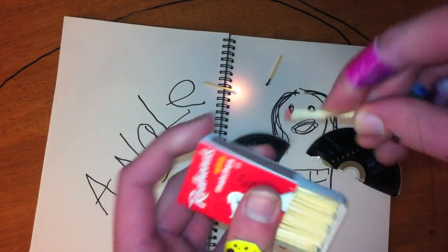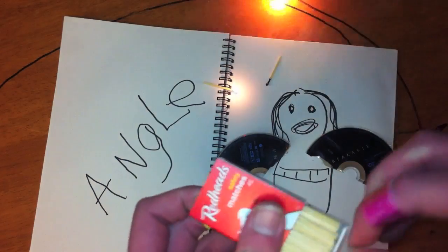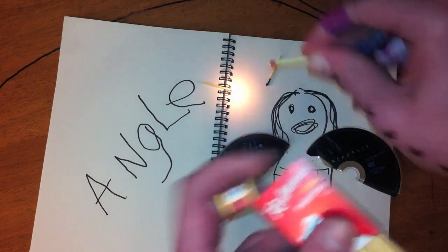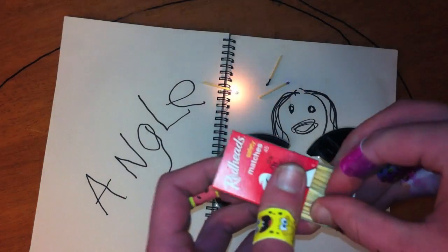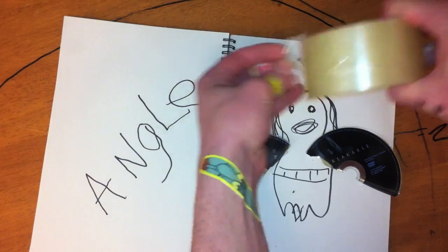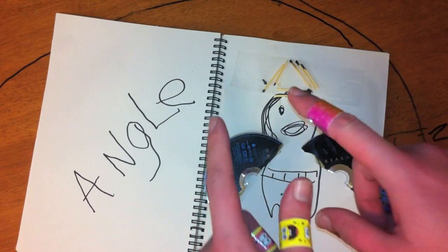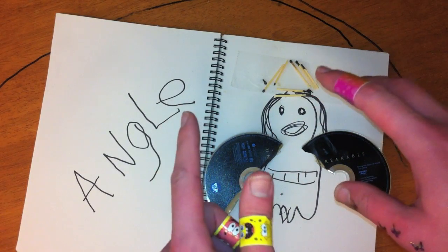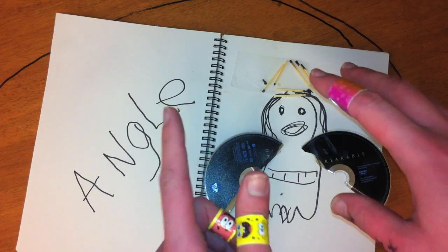Say hello to my halo. Say hello to my halo, Santa Claus. So once you have enough matches, you can arrange them into a halo shape. And if that doesn't prove that angels are real, then I don't know what will.